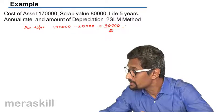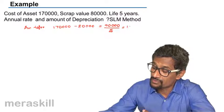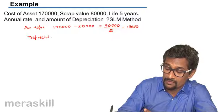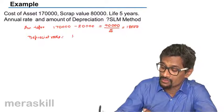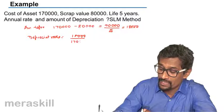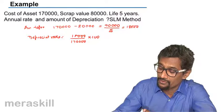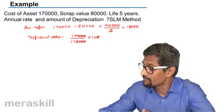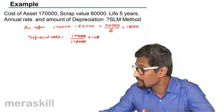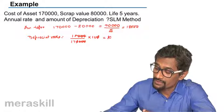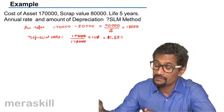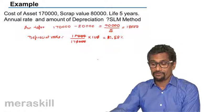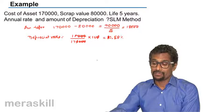And depreciation rate is going to be 18,000 upon the cost that is 1,70,000 into 100, so it's going to be 180 by 7, which is roughly around 10.58% is the depreciation rate as per the straight line method. So this is the SLM method of calculating the depreciation rate as well as the annual depreciation.